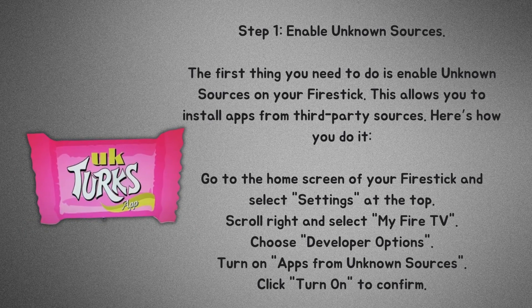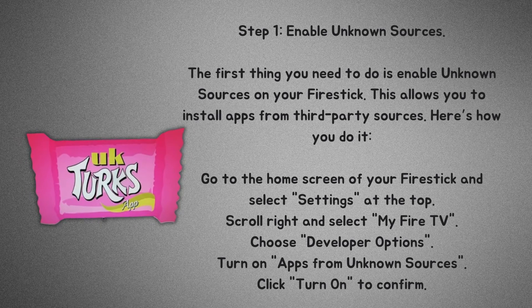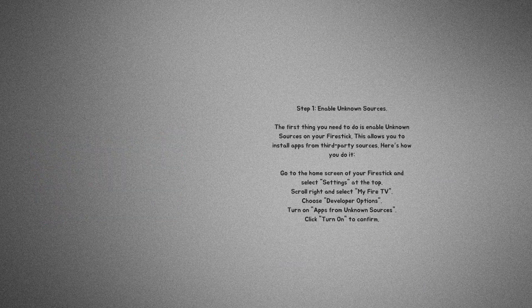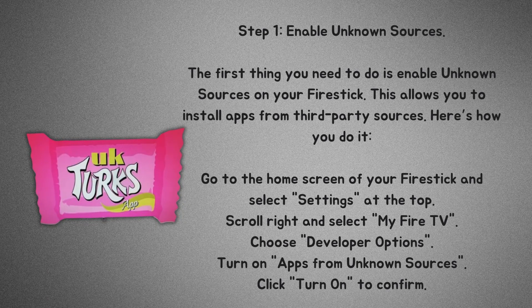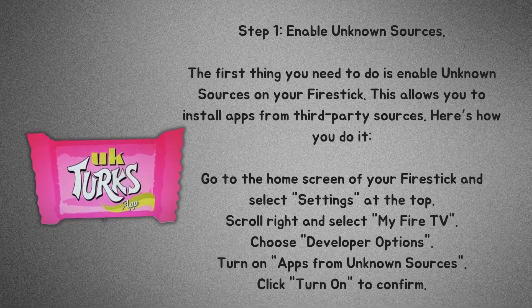Step 1: Enable unknown sources. The first thing you need to do is enable unknown sources on your Fire Stick. This allows you to install apps from third-party sources. Here's how you do it: go to the home screen of your Fire Stick and select Settings at the top. Scroll right and select My Fire TV. Choose Developer Options. Turn on Apps from Unknown Sources and click Turn On to confirm.